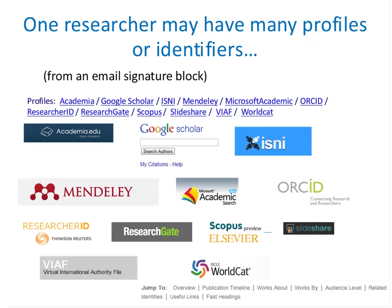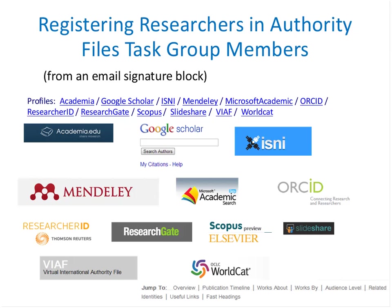Some researchers already have multiple identifiers. This is an example from a signature block in an email — the researcher includes 12 different identifiers or profiles he is represented in. This also fragments his web presence. To recap the challenges: citations are a factor in assessing the impact of scholarship, but journal article authors often are not represented in authority files. A given scholar can be represented by different forms of a name, and cannot be matched accurately by string matching alone. Two or more researchers may have the same name, and we need other attributes to disambiguate them.